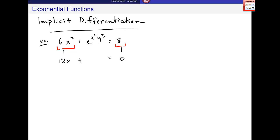Now this piece takes a little bit more work. I know that when I have e to the u, the derivative of that is e to the u times the derivative of the inside. So what I really need to find is the derivative of x squared y cubed, which involves using the product rule.